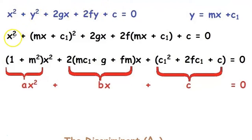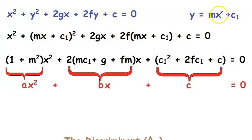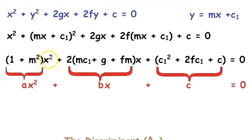So that will be x² + y², where instead of y we write mx + c₁. So that will be (mx + c₁)² + 2gx + 2f(mx + c₁) + c = 0. When we open the brackets and rearrange, we get (1 + m²)x² + 2(mc₁ + g + fm)x + c₁² + 2fc₁ + c = 0.